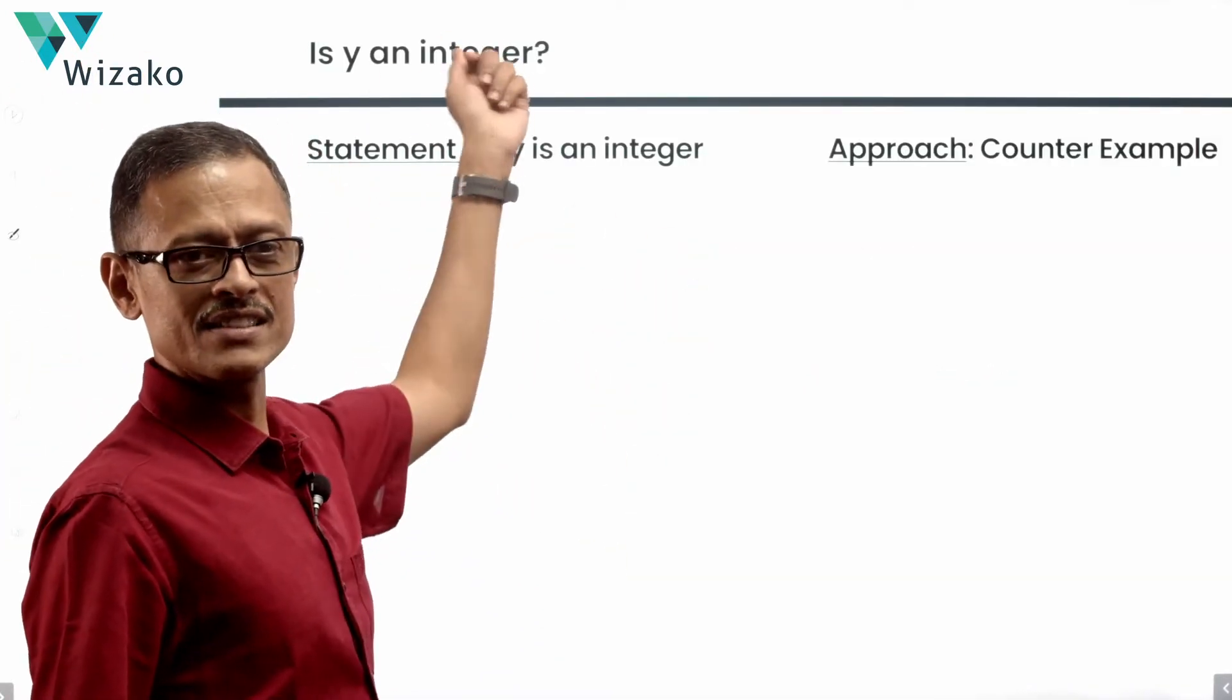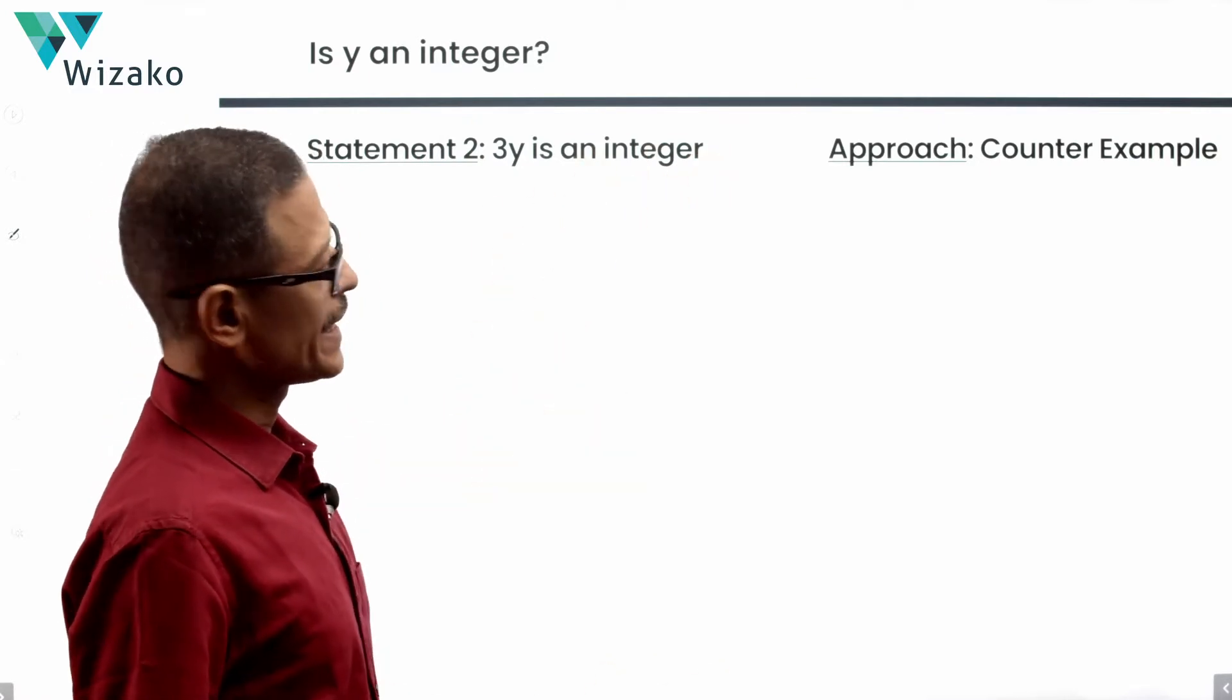Evaluate statement 2 alone. See whether that's going to help us. Statement 2 says 3y is an integer. Again, the question is, is y an integer? Approach I am taking is a counter-example.